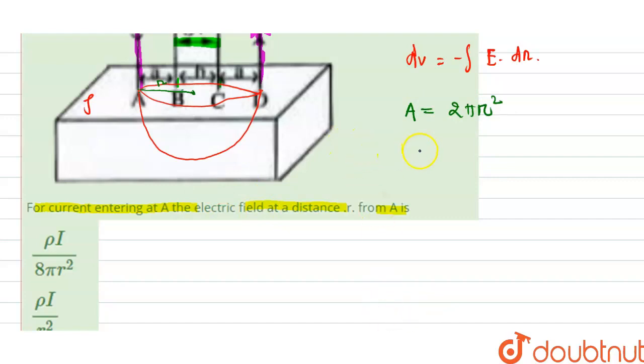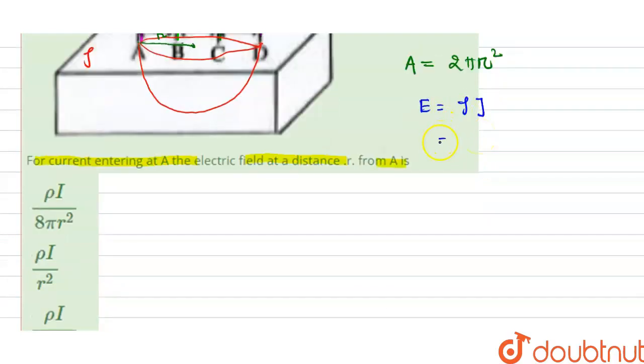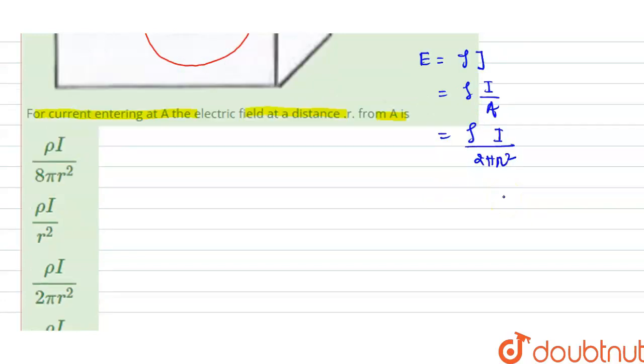Now in this question it is given that using Ohm's law, Ohm's law says that electric field is equal to density, means volume charge density, into current density. The current density we know is nothing but I divided by surface area, and for this hemispherical bowl we have the constant term and I divided by surface area, there is 2πr².